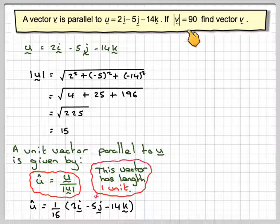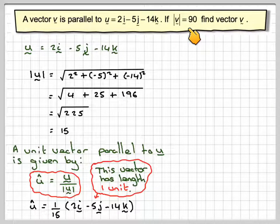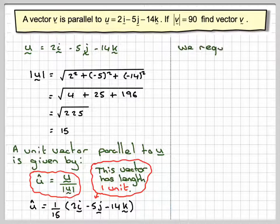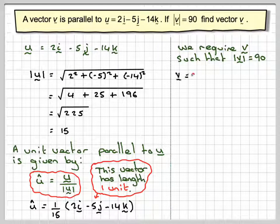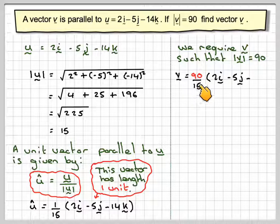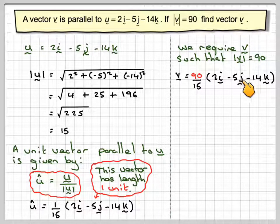Therefore, if we want a vector parallel to U which has a length of 90 units, all we need to do is multiply this by 90. So V will be 90 over 15, times 2i minus 5j minus 14k.